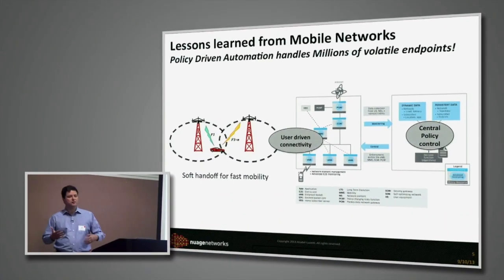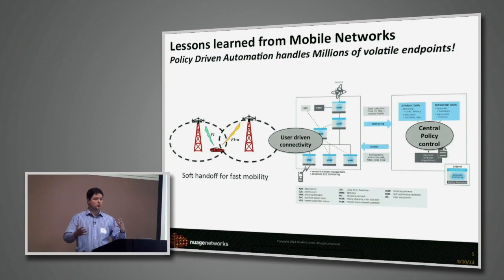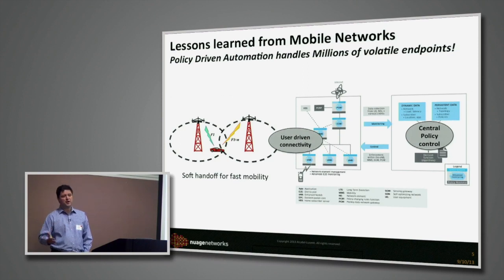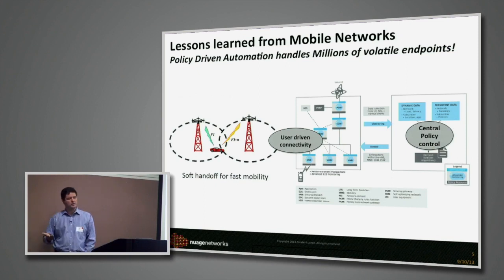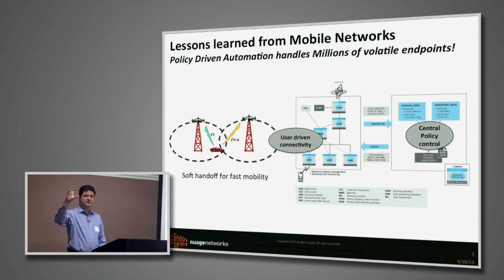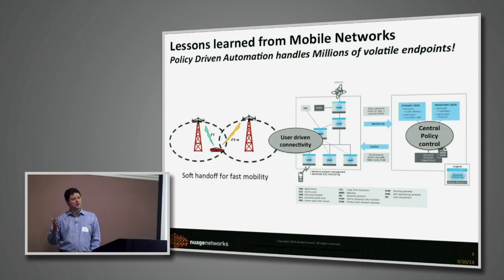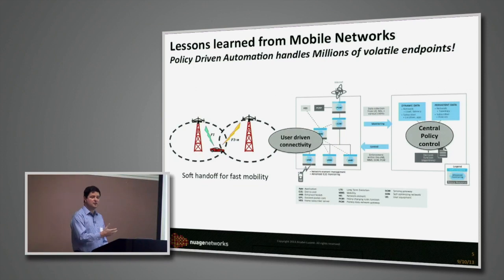If we go back to mobile data, you have a number of mobile devices that could move between different network attachment points — it's a huge number, usually millions of them. It's a user-driven connectivity model. Everybody has a cellular phone; you just turn it on, it connects to the network, and you start getting data on your device. This was enabled by user-driven connectivity mechanisms, but more importantly by a centralized policy module under the control of network admins, where you can provision per-user profiles that are then automatically assigned.